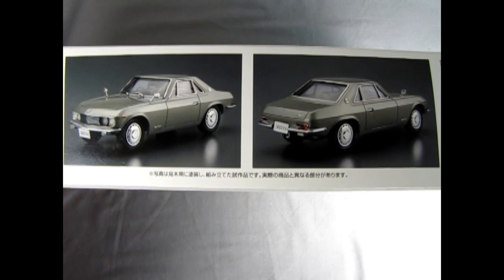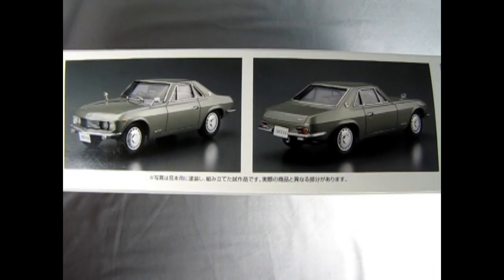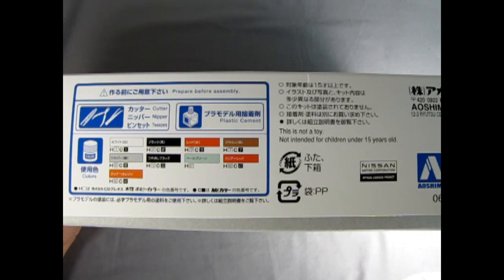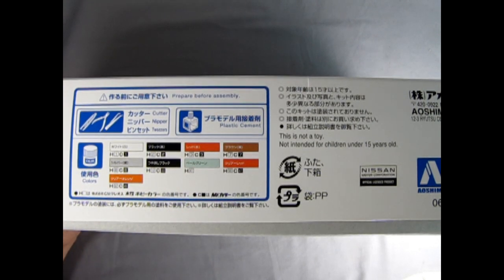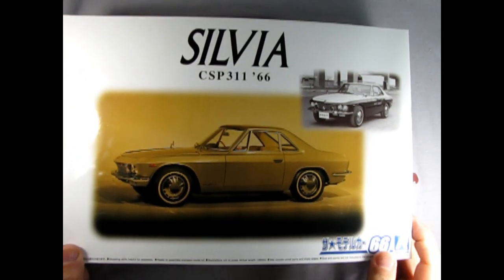On this side of the box we get a front three-quarter view of the car as well as the rear view quarter of the car just for reference. And on the opposite side of the box we have some of the tools and the paint color call outs that you will need to build this kit. Now let's lift the lid off the box and see what's inside.